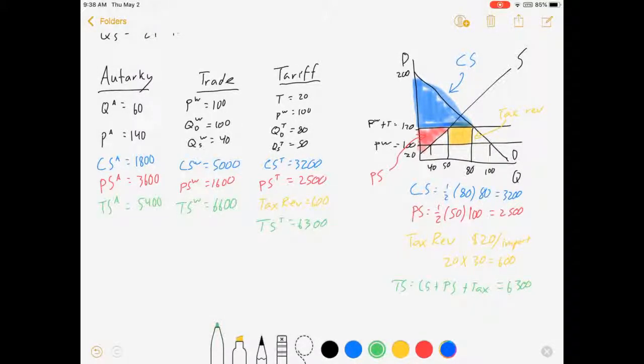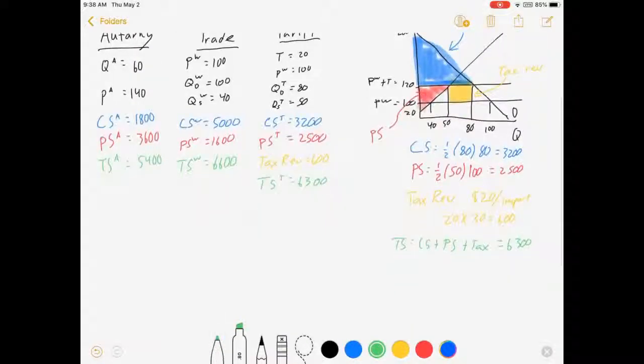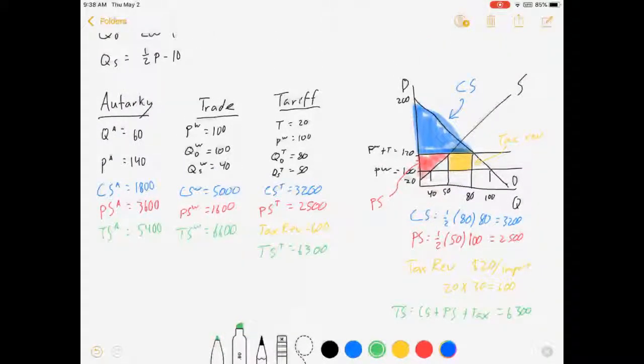So a couple of things for us to point out now. We know that this protects our producers and it harms our consumers. One thing we're going to see is that the net effect on society is a loss. If you tax an efficient market, it will make it less efficient. Our deadweight loss, we haven't talked about that yet. A deadweight loss is just a loss in surplus in your market.